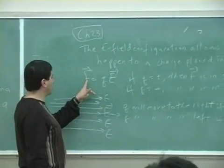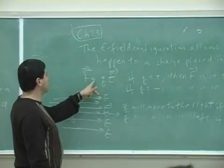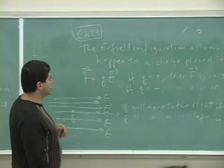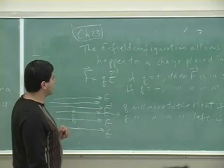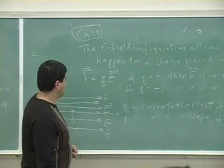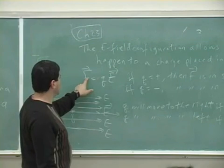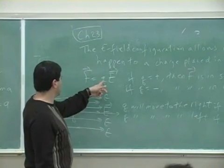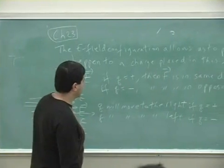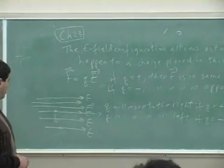We can see that the force due to an E field is equal to QE, so due to the E field configuration we can predict what will happen to the charge placed in it. If the Q is positive, the force experienced is in the same direction as E, because it's just positive times E. If the Q is negative, then the force experienced by the charge is opposite to E.